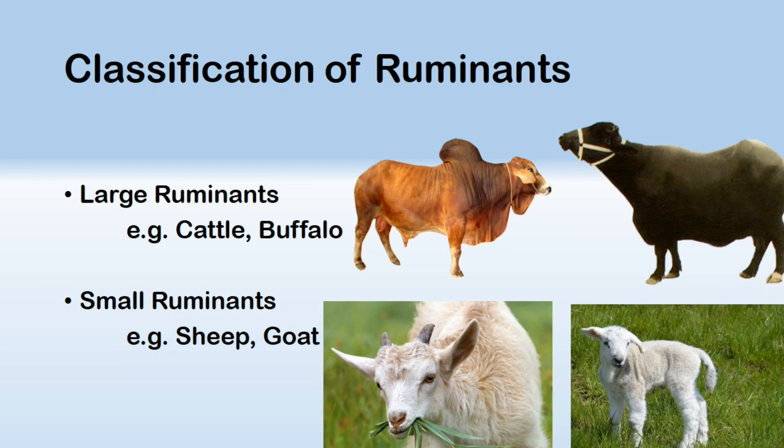Ruminants can be further classified into two groups: large ruminants and small ruminants. The term large ruminants is mostly used for cattle and buffalo. Similarly, the term small ruminants is used for sheep and goat.